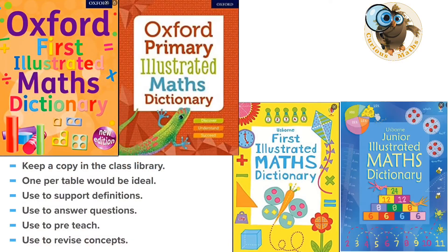Number eleven: maths dictionaries. I started with just one copy in the class library, but ideally one per table is the best solution. An illustrated maths dictionary makes a huge difference — it helps children get high-quality definitions and makes their maths books more like revision guides. I also use them when children ask questions — get them to look up the answer themselves. They work really well with pre-teaching and revising any concepts you need to cover.